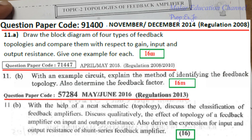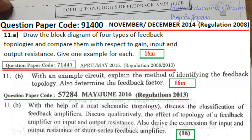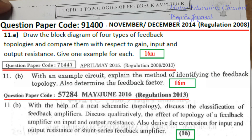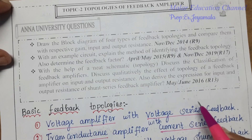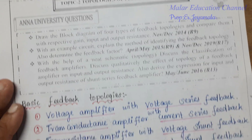Also derive the expression for input and output resistance of shunt-series feedback amplifier (May/June 2016). These are all old regulation questions but the topics are the same.